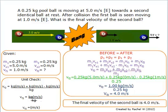A 0.25 kilogram pool ball is moving at 5 meters per second east towards a second identical ball at rest. After the collision, the first ball is seen moving at 1 meter per second east. What is the final velocity of the second ball?